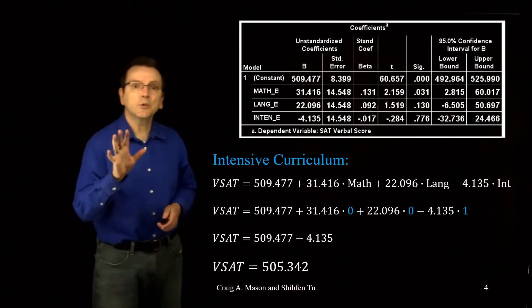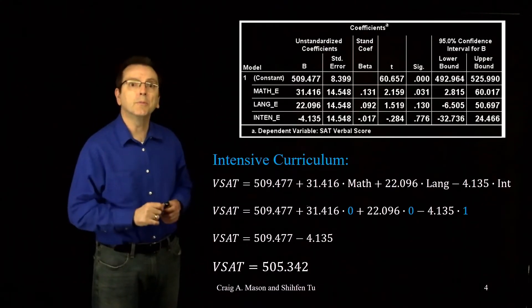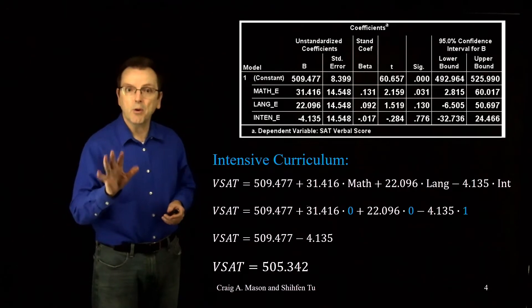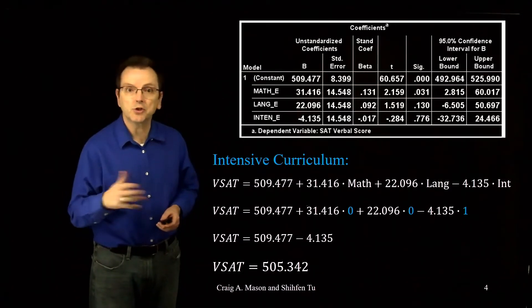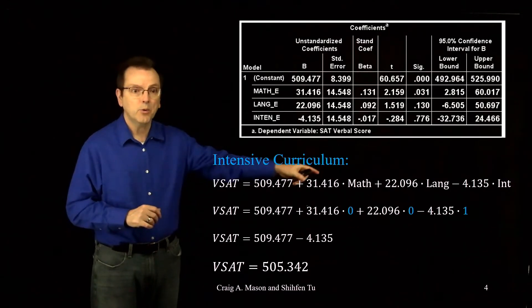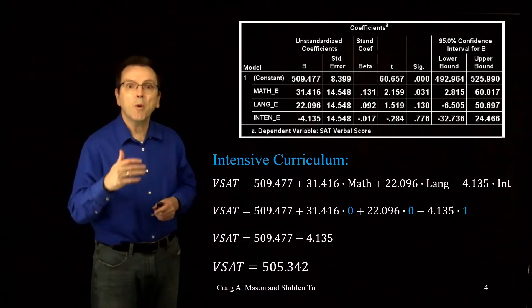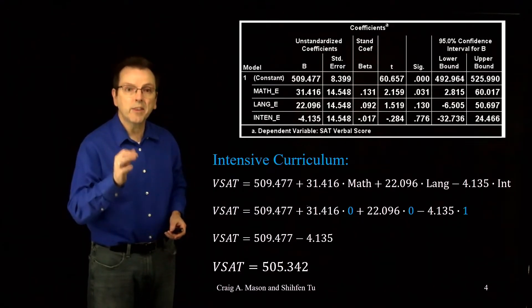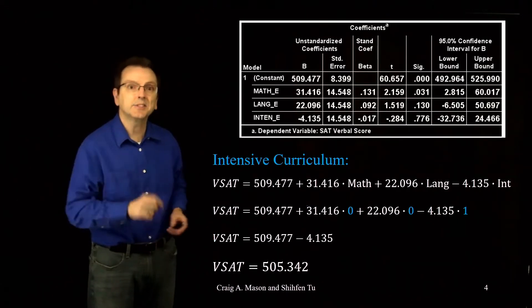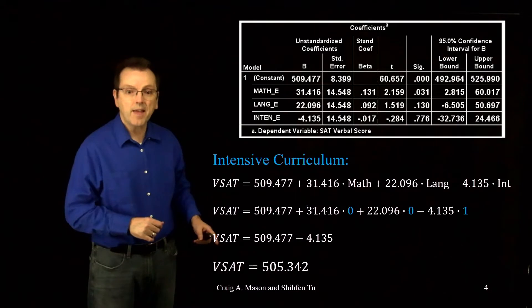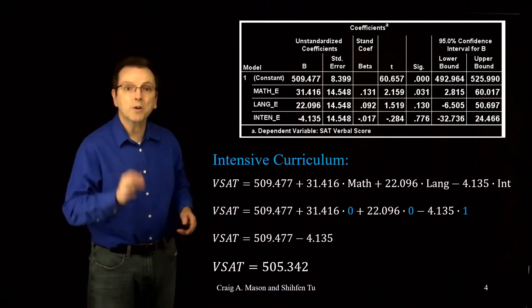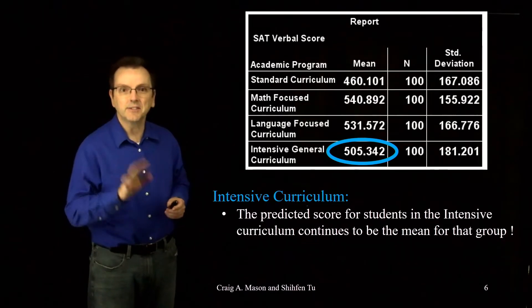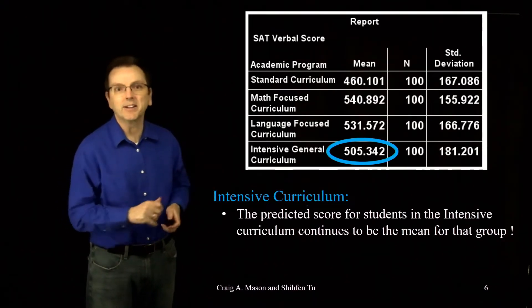Did you get a predicted score of 505.342? Now, both the math and the language curriculum effect codes would be zero, so those coefficients would just drop out. The intensive curriculum effect code would be one. So, the equation would reduce to 509.477 minus 4.135. Note the negative sign on that coefficient. If we do that math, that solves to 505.342. And in case you're wondering, yeah, it's equal to the mean of the intensive curriculum group. No surprise there at this point.